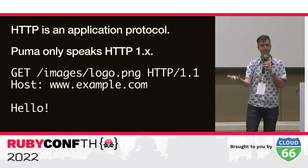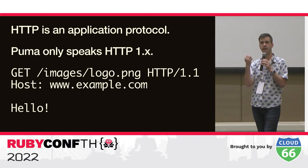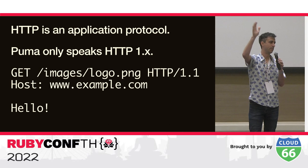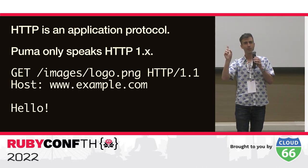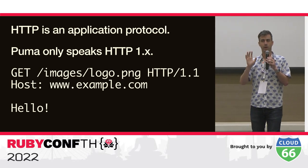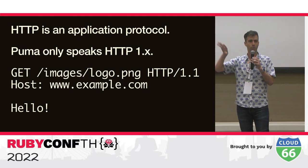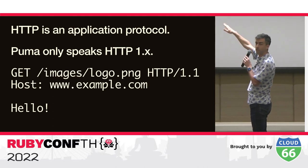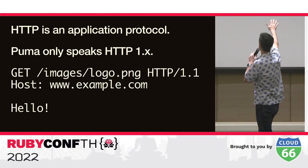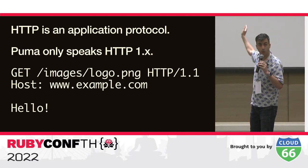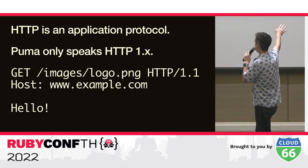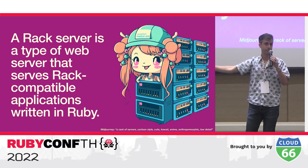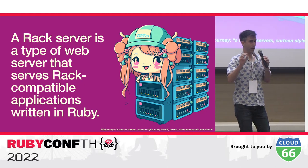What are we sending over the socket? HTTP — an application layer protocol in the OSI model. Puma only speaks HTTP 1.x. It's a very simple protocol: you have a verb like GET, a path, the HTTP version, some headers and values, then a message body.